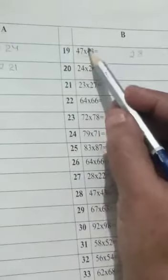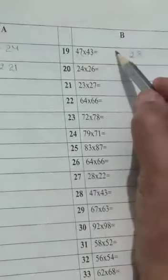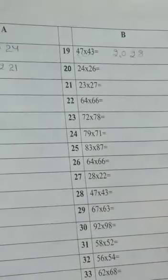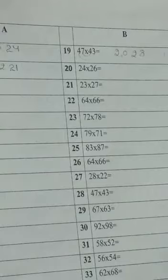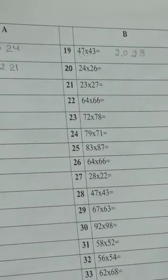4 4s are 16 plus 4 is 20. So 2028 is your answer. Now, you have to complete this page and practice it. Thank you.